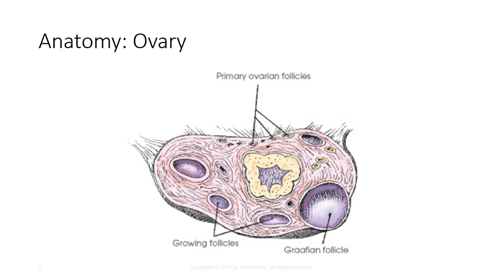The medulla is the core of the vascular tissue, while the cortex composes the outer, glandular tissue. Each ovary contains ovarian follicles, and each follicle contains one ovum. A fully developed ovarian follicle is referred to as a graafian follicle. Ovulation occurs with the extrusion of an ovum by rupture of a follicle.